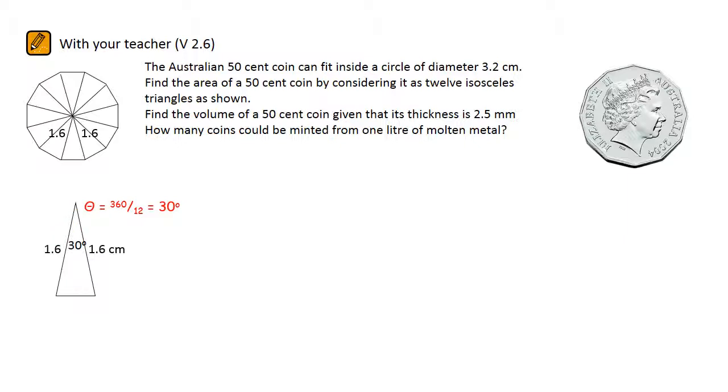We can now use the formula area equals half AB times the sine of angle C. So it is half times 1.6 times 1.6 times the sine of 30 degrees. The area of one triangle works out to be equal to 0.64 cm².